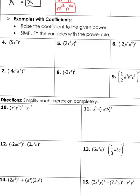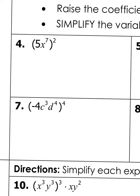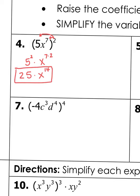For examples with a coefficient, we have to raise the coefficient to the given power as well, then simplify the variables with the power rule. For example four: we have 5x to the seventh power squared. This two has to go to the five and to the seven. We do five squared times x to the seven times two power. Five squared is like doing five times five, so that's 25, and seven times two makes x to the fourteenth power. Our answer is 25x to the fourteenth power.